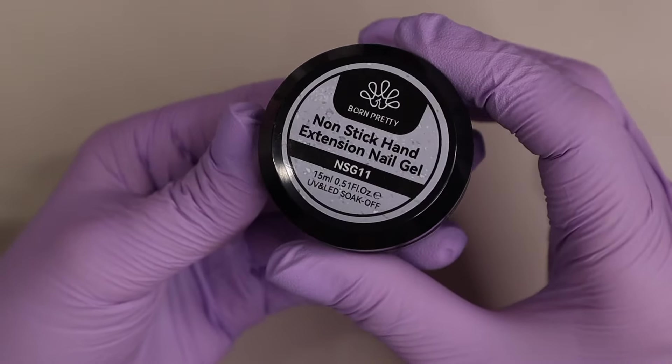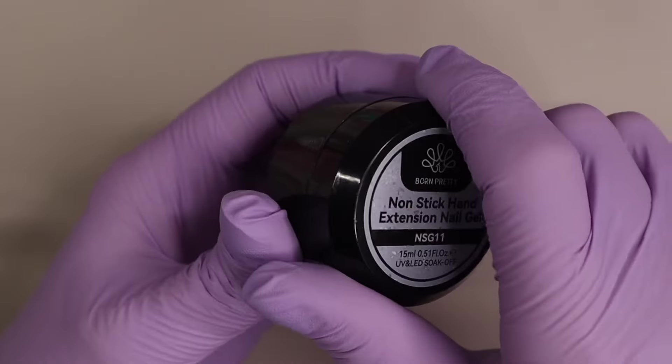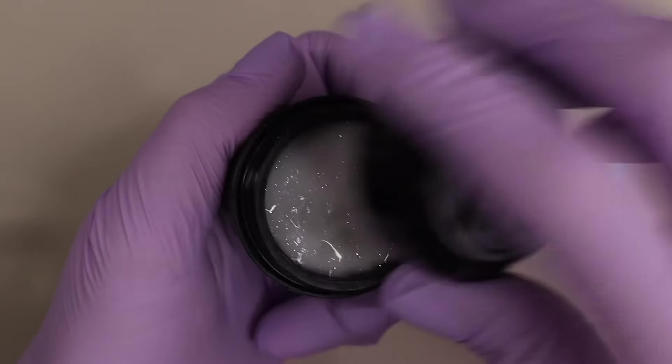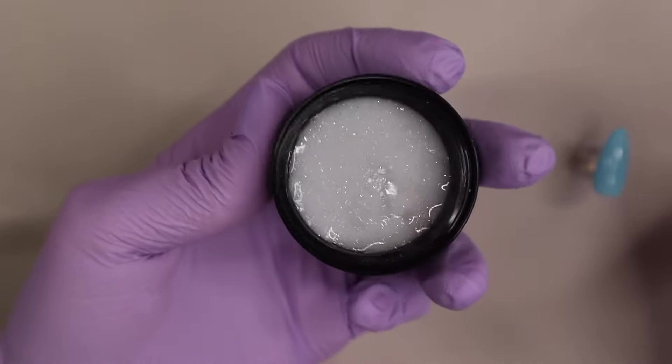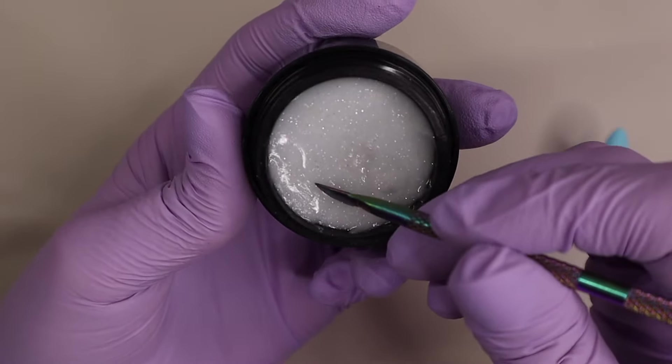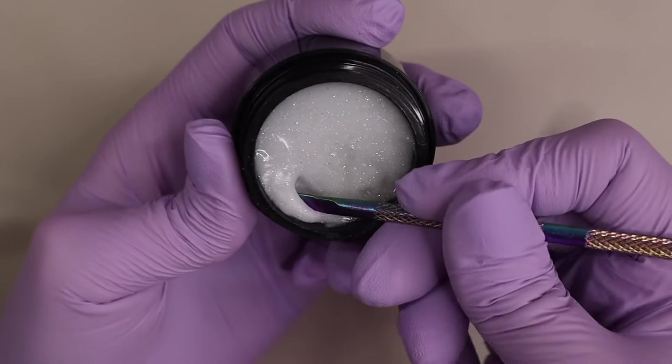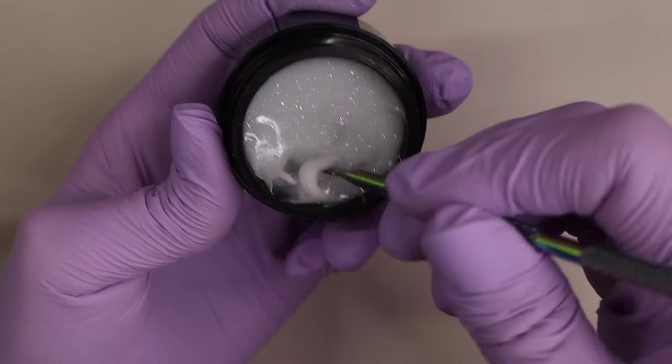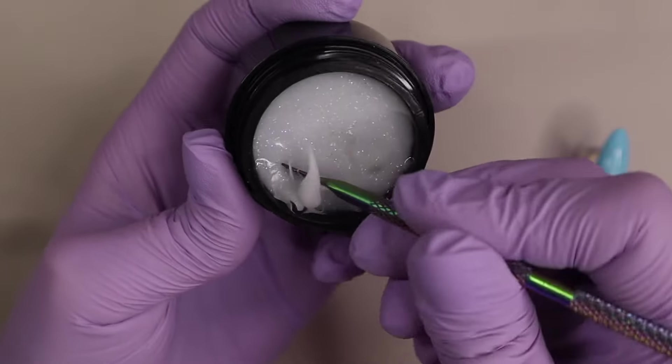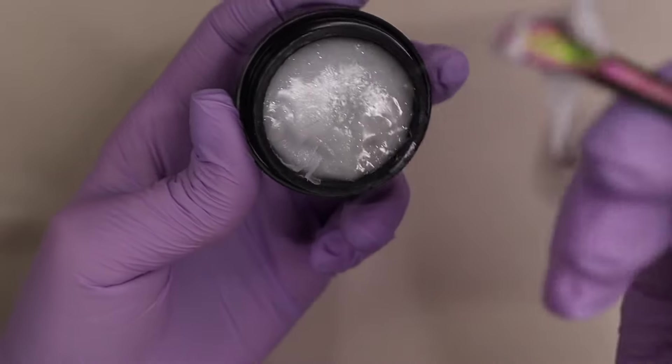To make the cotton candy I use this product from Born Pretty. It is their non-stick hand extension nail gel glue. Essentially it's just a moldable gel that you can use for 3D elements. You can even use this to attach nail tips to your nails. It's a very versatile product but I particularly like it for sculpting.